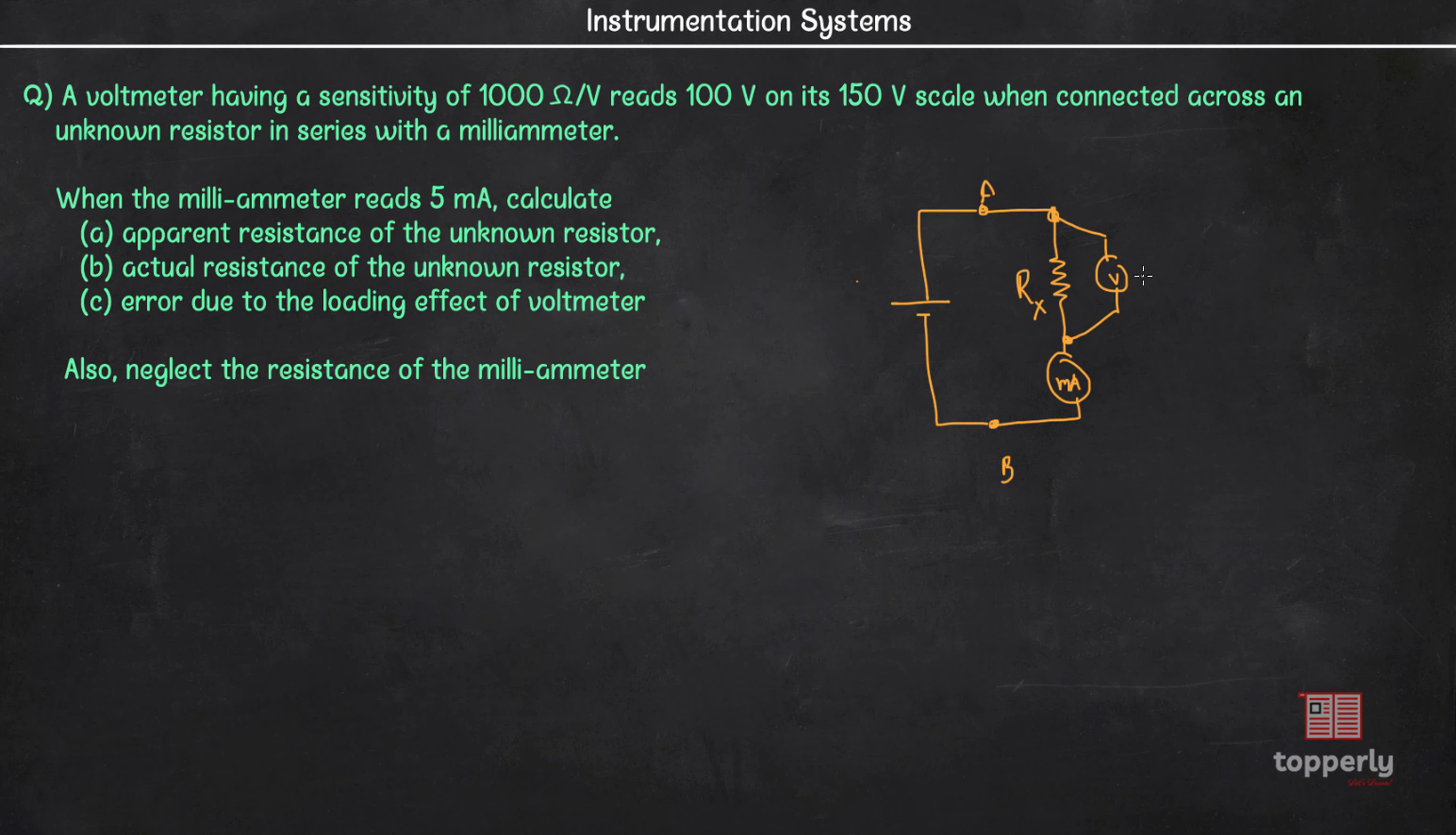Now it is given that the voltmeter reads 100V and the milli-ammeter reads 5 mA. So we can calculate the total circuit resistance Rt equal to 100V by 5 mA which is equal to 20 kOhm. Also note that it is stated to neglect the resistance of milli-ammeter. So this 20 kOhm is the combined resistance of unknown resistance and internal resistance of the voltmeter. That is, this 20 kOhm is the apparent resistance of unknown resistor.